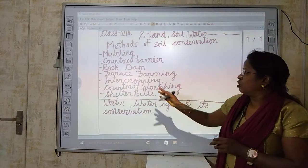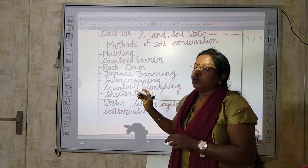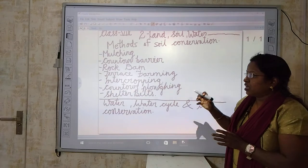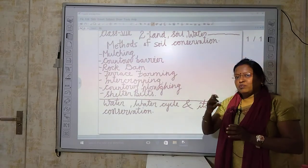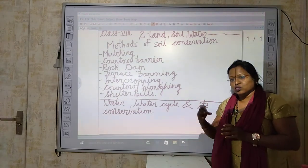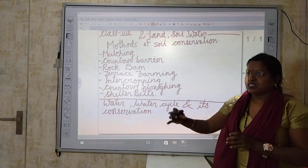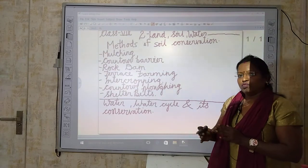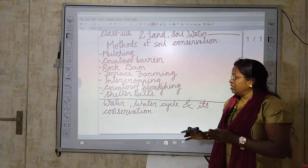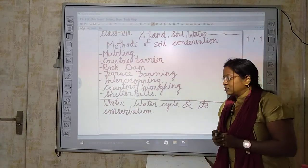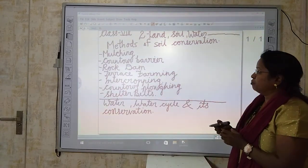Next is rock dam. Rock dam means we collect small pieces of stones and arrange them in such a way so that water will not flow away. Rock dam is another system of soil conservation.